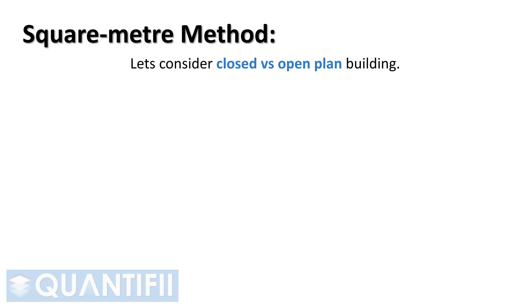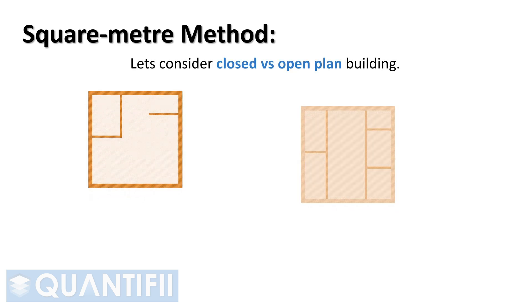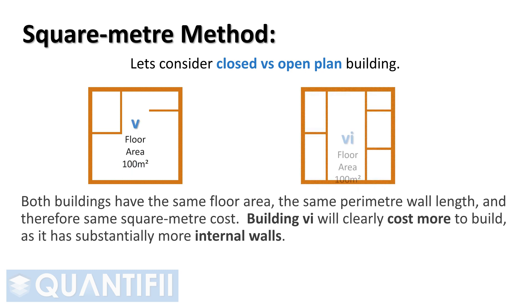Lastly, let's look at closed versus open plan building. Both buildings have the same floor area, the same perimeter wall length, and therefore the same square meter cost. Building six will clearly cost more to build, as it has substantially more internal walls.